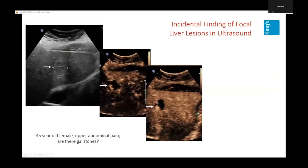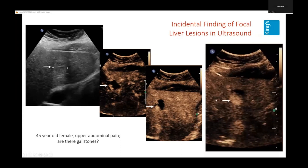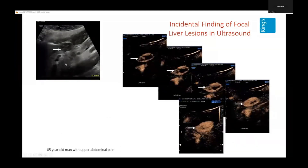Here's another patient — a 45-year-old with upper abdominal pain asked to check for gallstones. There is a very atypical lesion in the lobe of the liver. After contrast injection, globular enhancement in the periphery is pathognomonic of a hemangioma, and you can watch that infilling over time. You don't need to investigate this anymore. This is an atypical hemangioma — and the expectation is that over the next few years it will probably appear very typical.